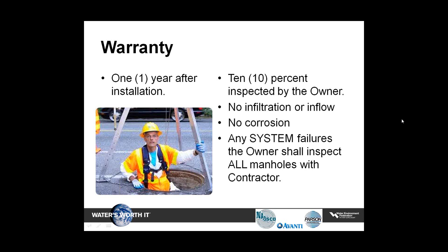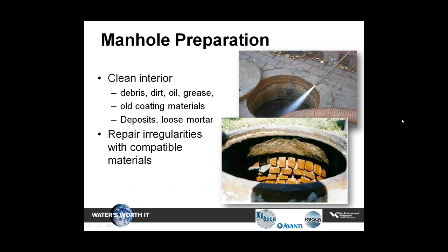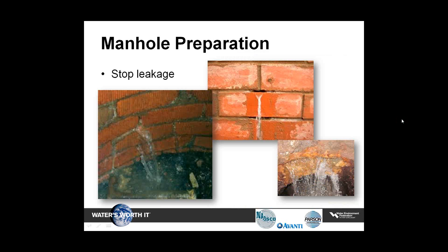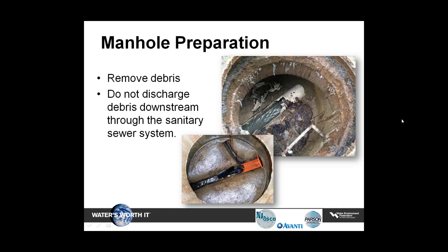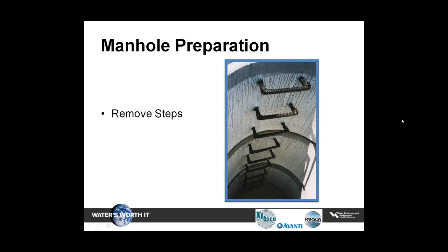Preparation of the manhole must include cleaning the interior surfaces to eliminate debris, dirt, oil, grease, and remains of old coatings. Remove loose mortar and concrete. Pressure washing levels used for cleaning shall be as recommended by the manufacturer. Repair irregularities in the manhole. Repair leakage using compatible materials that are compatible with the proposed resurfacing material. Trim grout at incoming landings and pipes as required. Remove debris from manhole and incoming sewer connections. Properly dispose of debris and residue from cleaning. Remove the steps flush.